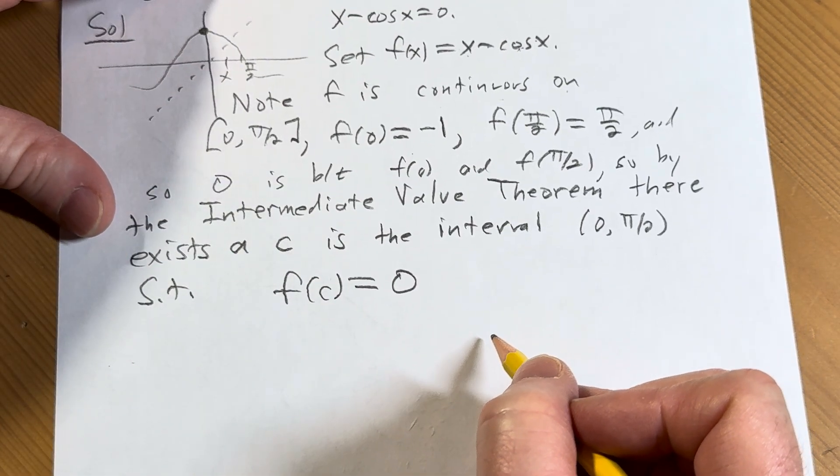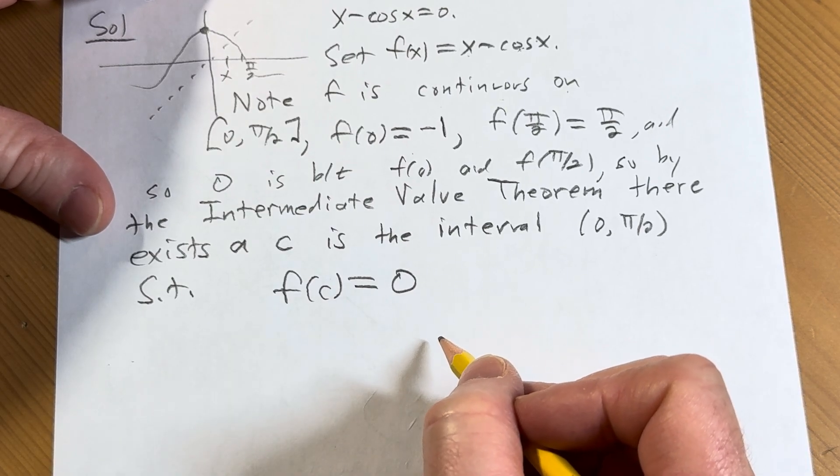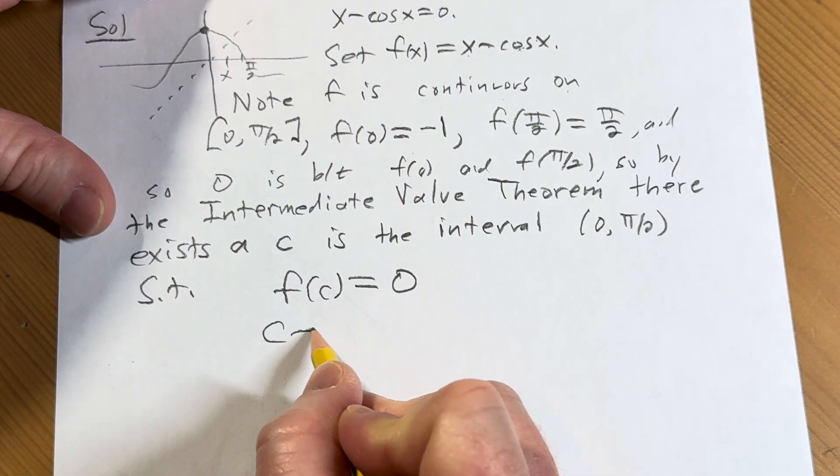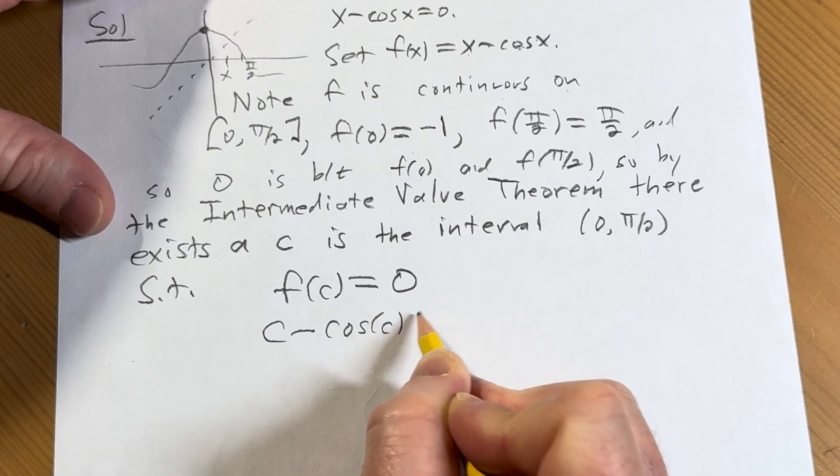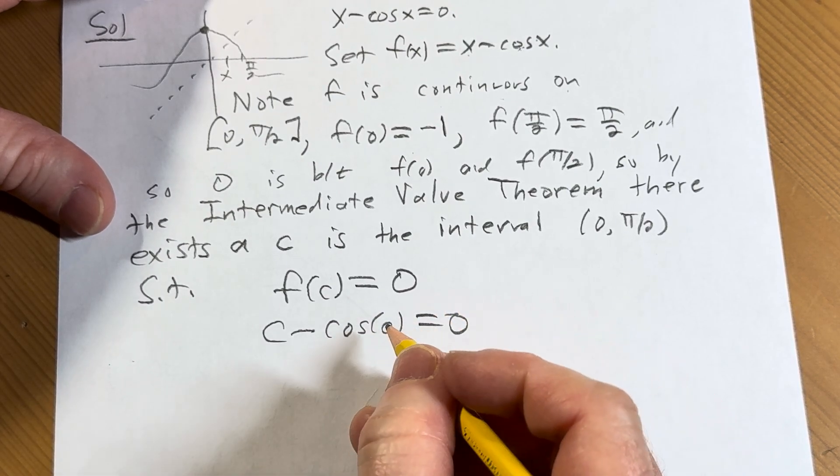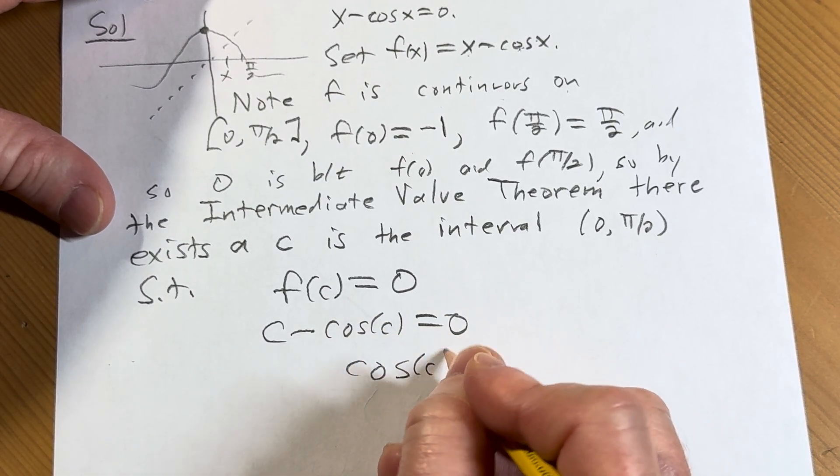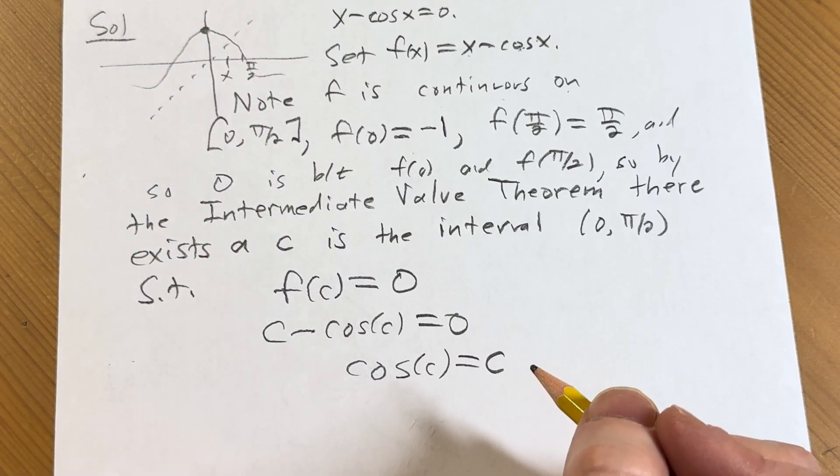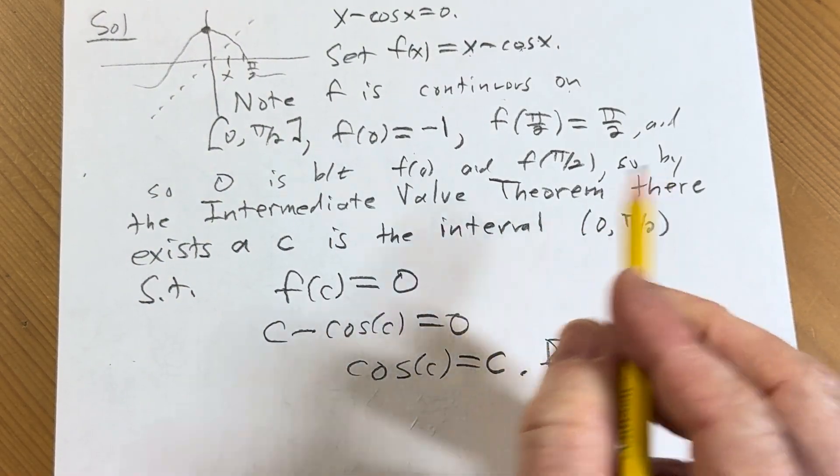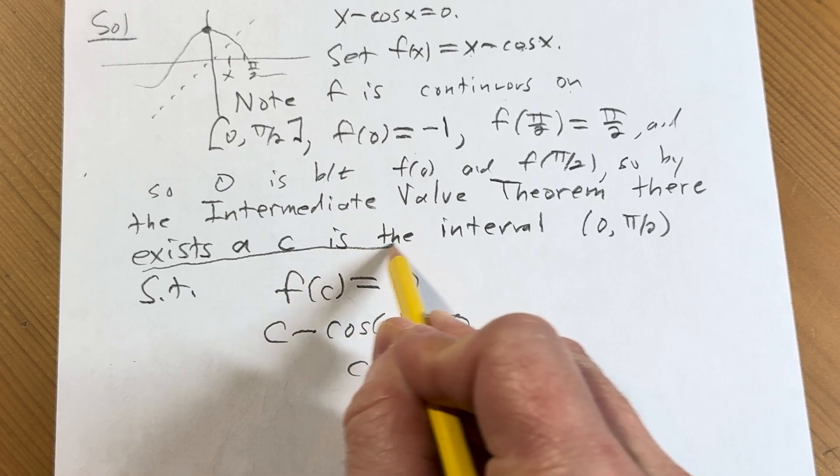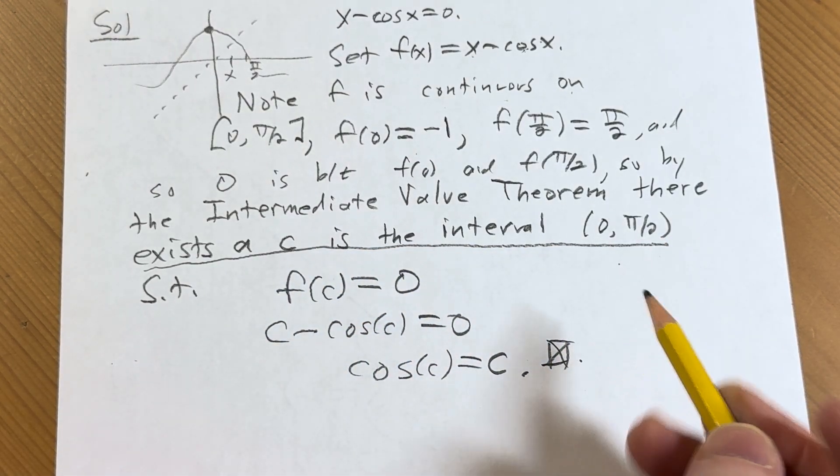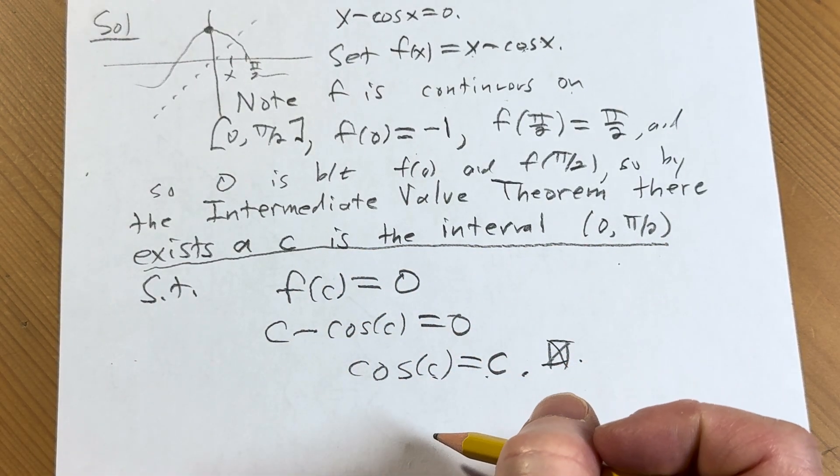So what does that mean? Well, that means that c minus cosine c is equal to 0. So that means that cosine of c is equal to c. So we've proven that there exists a c in this open interval of real numbers, such that cosine of c is equal to c.